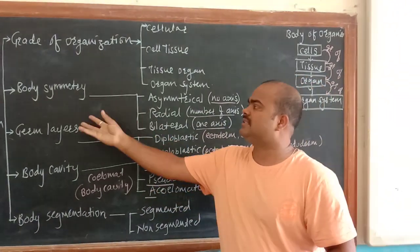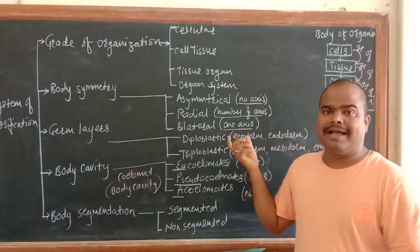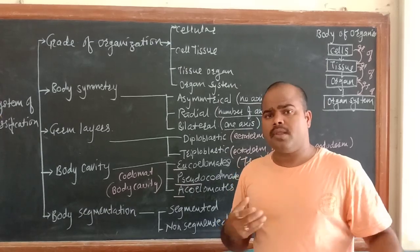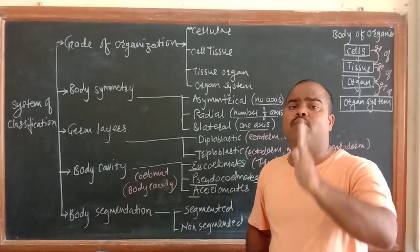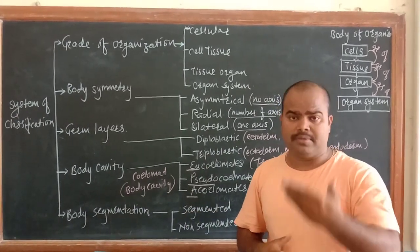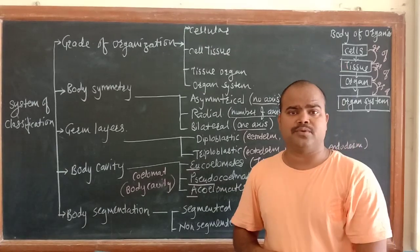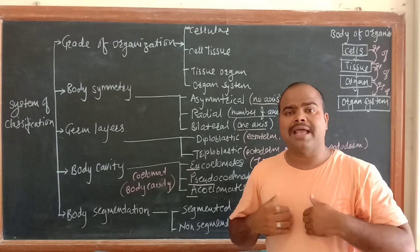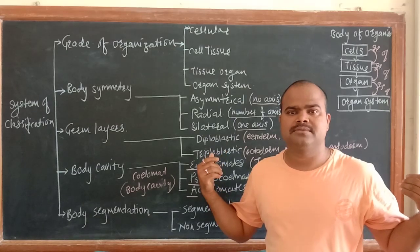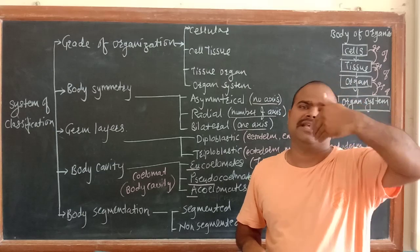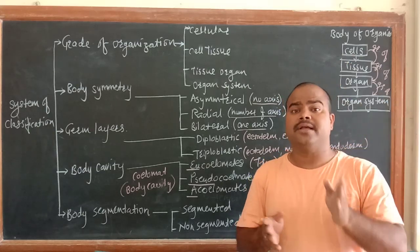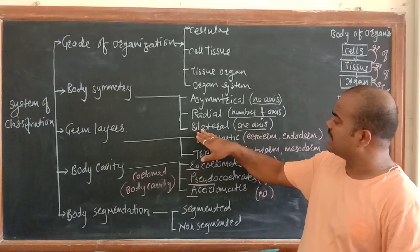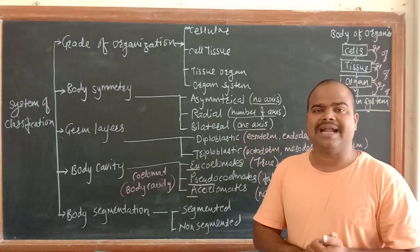The next one is bilateral. As we know, humans and other animals show only one imaginary axis of line. When we cut that animal into a longitudinal section, we have two equal halves. But in other axes, it's not two equal halves. So all mammals come under bilateral symmetry.